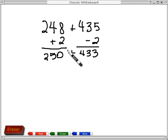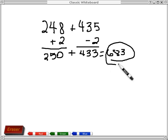So adding 248 and 435 is the same thing as adding 250 and 433. Now when I do that, this one's pretty easy because I can just take 2 and the 4 make 6, the 5 and the 3 make 8, and the 0 and the 3 make 3. And so I just get 683 piece of cake.